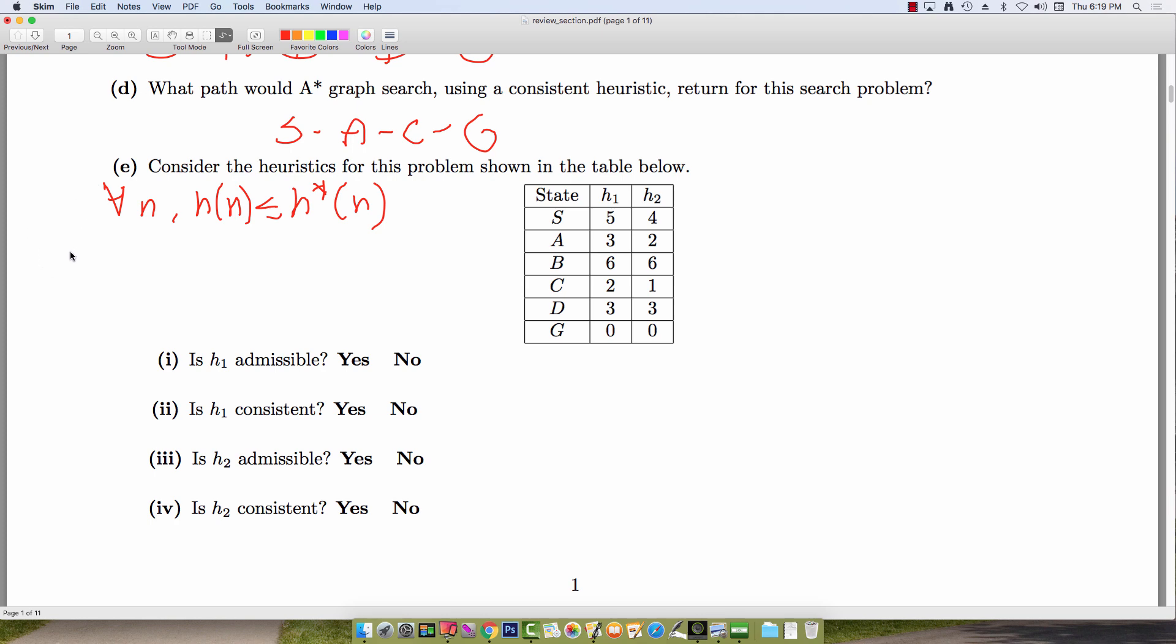Consistency is defined as sort of a triangle inequality where for each edge A to B, I have that H(A) is less than or equal to the edge cost from A to B plus the heuristic cost to B. So it's just bounding how much I changed my heuristic value based on this edge cost from A to B.